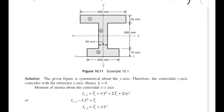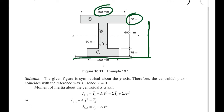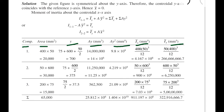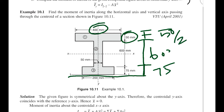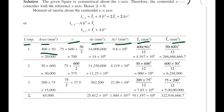For the first component, the area equals 400 × 50 = 20,000 mm². The centroidal distance y is measured from the reference axis 1-1: 75 + 600 + 50/2 = 700 mm. The Ay value is 20,000 × 700 = 14 × 10⁶.